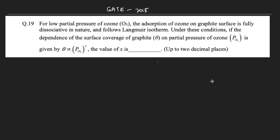This question was asked in Gate 2018. It says: 'For a low partial pressure of ozone O₃, the adsorption of ozone on a graphite surface is fully dissociative and follows the Langmuir isotherm. Under this condition, if the dependence of the surface coverage of graphite (θ) on the partial pressure of ozone (pO₃) is given by θ ∝ pO₃^x, what will be the value of x?' I'm assigning this as a homework question — do not look up the Gate 2018 answer key.